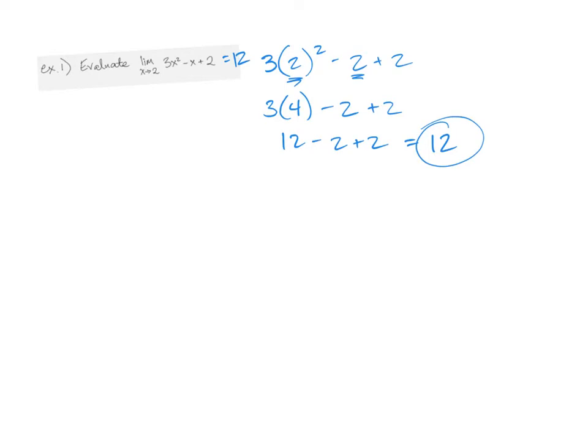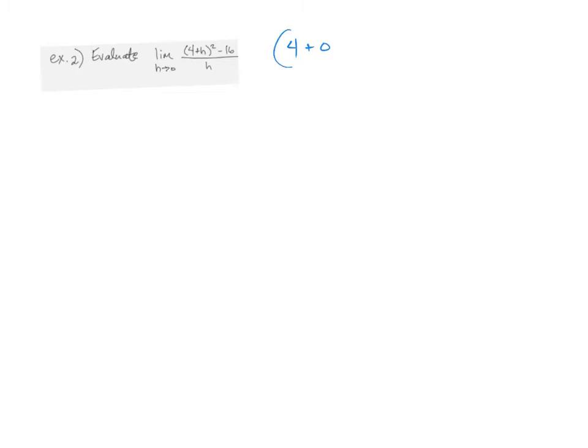Chances are you won't see any of those on the AP test. So let's go to the next one — this looks pretty familiar. If I just substitute — remember, that's always the first thing you want to do — I've got four plus zero squared minus 16 over zero, substituting zero for H. I get 16 minus 16 over zero. That's zero over zero. So it was something that was undefined; substituting wasn't good enough in that case.